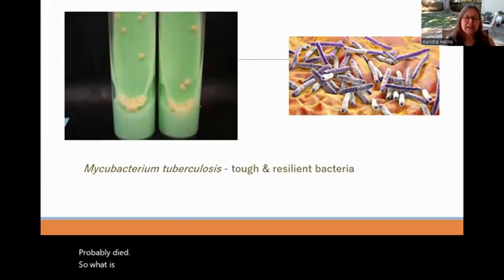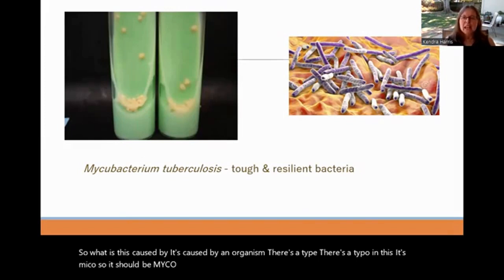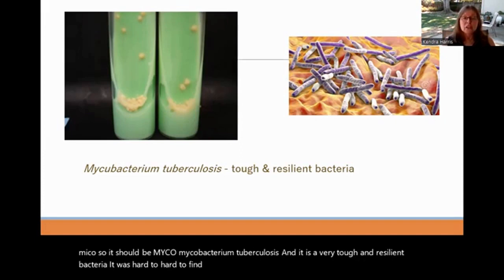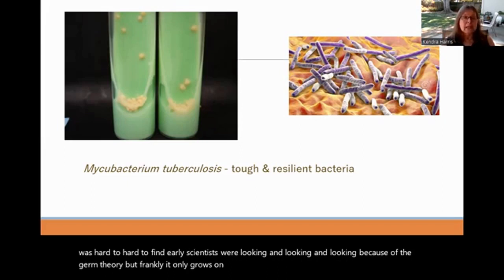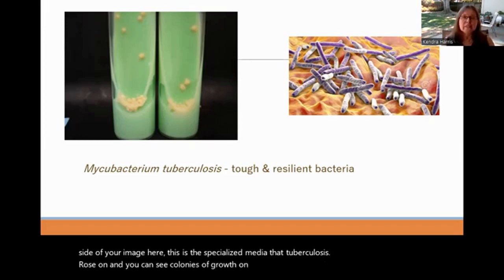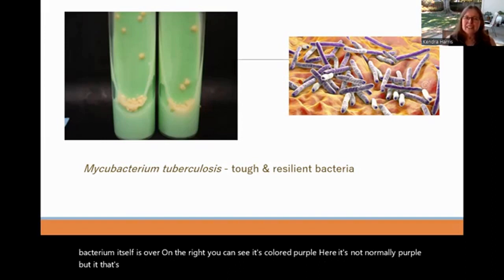What causes this? It is caused by mycobacterium tuberculosis — a very tough and resilient bacteria. It was hard for early scientists to find because it only grows on very special media. On the left you can see the specialized media tuberculosis grows on, with colonies of growth visible. The bacterium itself, shown on the right, is colored purple here just for visibility — it is naturally a long, thin bacillus.